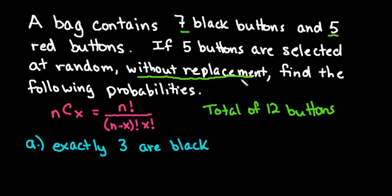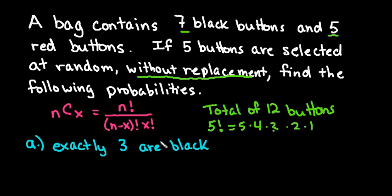Whenever it says without replacement, you have to use the combination rule. Remember that the combination rule is n factorial divided by (n minus x) factorial times x factorial. Factorial means, for example, 5 factorial is 5 times 4 times 3 times 2 times 1. Most calculators today have this already stored in them because combination problems are very common. In this video I want to show you how to use this rule without a calculator in case you have to show your work.